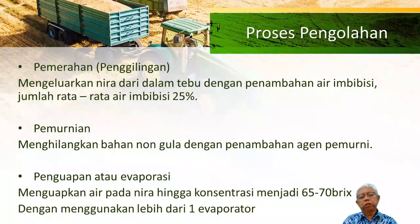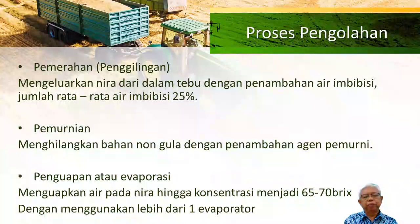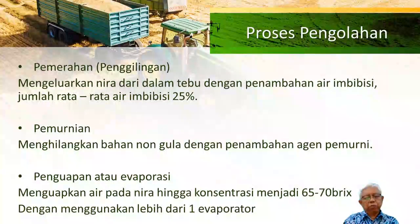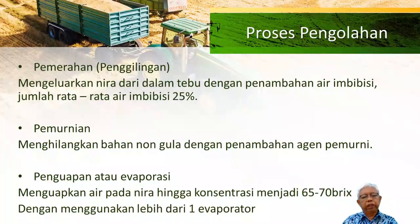Dengan menggunakan lebih dari satu evaporator — kalau di industri Anda tidak akan menemukan satu pabrik gula dengan evaporator yang tunggal — pasti ada mungkin tiga, empat, bahkan lima tahap evaporasi. Ini penting dalam rangka untuk meningkatkan efisiensi proses evaporasi. Yang multiple effect evaporation menggunakan uap yang dihasilkan dari evaporator satu, yang akan dipakai sebagai pemanas di evaporator yang kedua dan seterusnya, sehingga utilisasi energi ini menjadi lebih efisien.